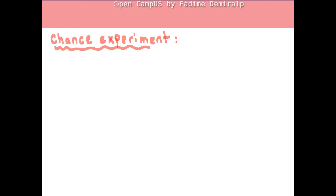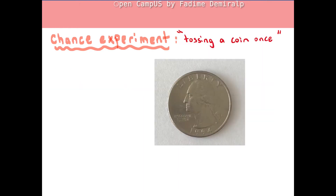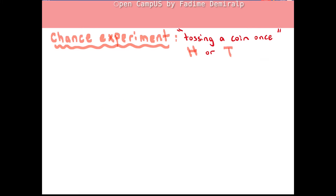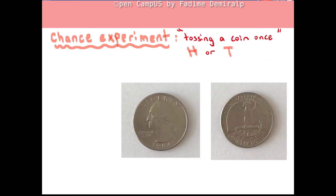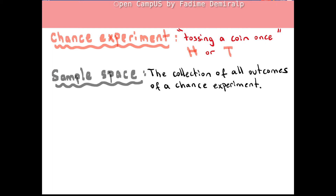Let's start with a chance experiment. When we toss a coin just once, the coin can land with its head side facing up or its tail side facing up. There are two possible outcomes in all, but we don't know in advance what the result of a particular toss will be. The collection of all possible outcomes of a chance experiment is called the sample space. Let's denote the sample space by capital S; then the sample space of our chance experiment of tossing a coin once is shown here.